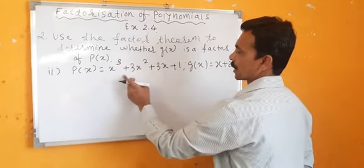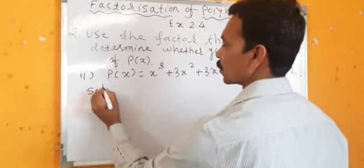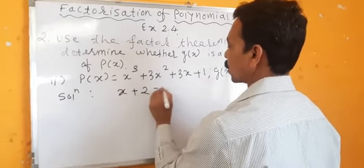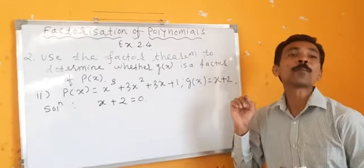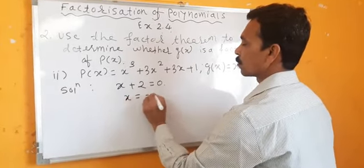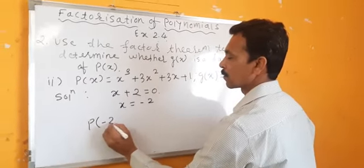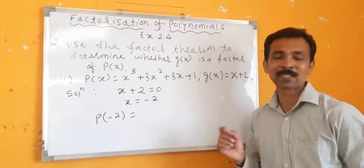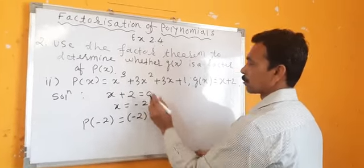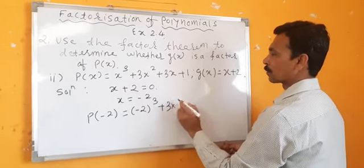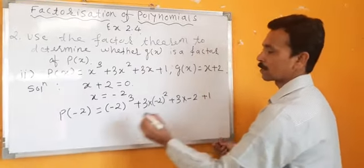Third bit: P of x is equal to x cubed plus 3x squared plus 3x plus 1, and g of x is x plus 2. So x plus 2 equals 0, meaning x equals minus 2. I will place this value in p of x giving p of minus 2: minus 2 whole cube plus 3 into minus 2 squared plus 3 into minus 2 plus 1.